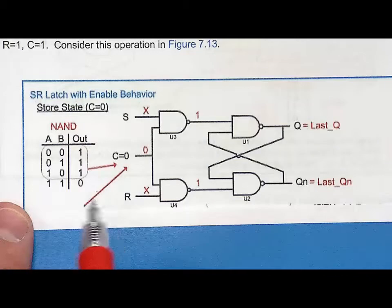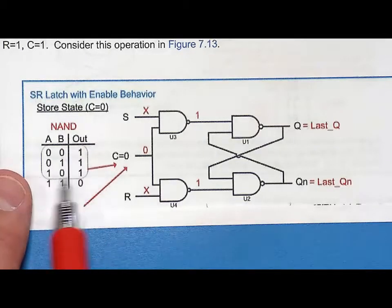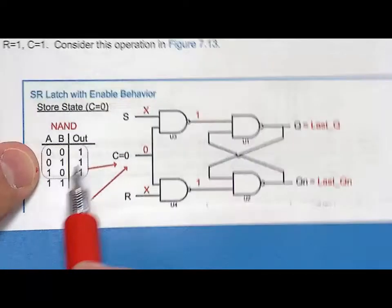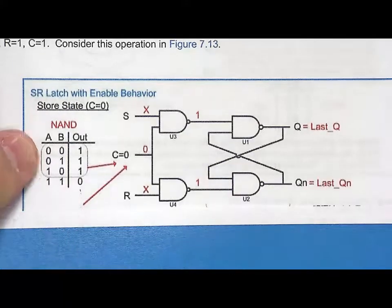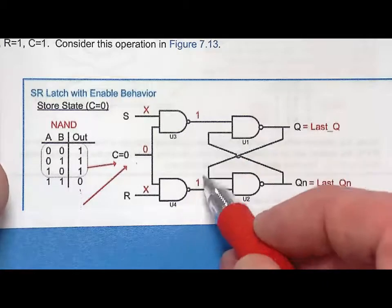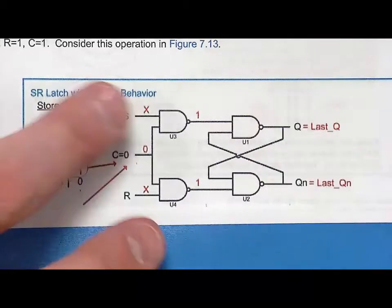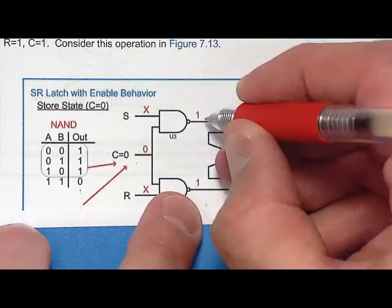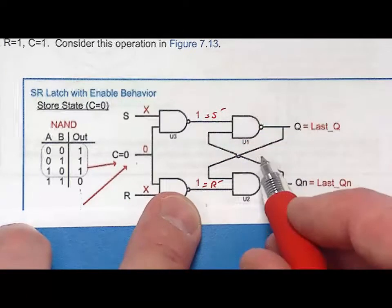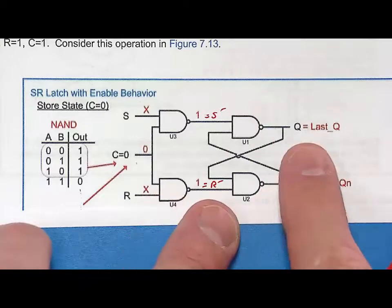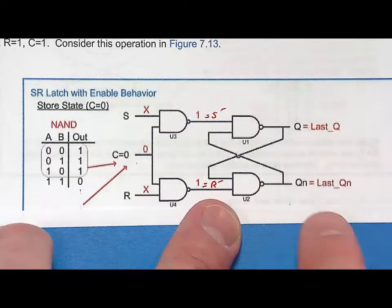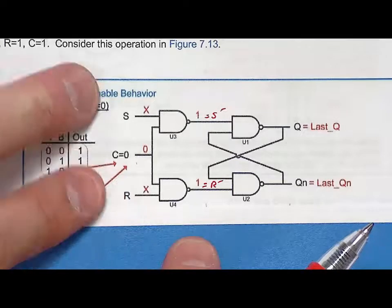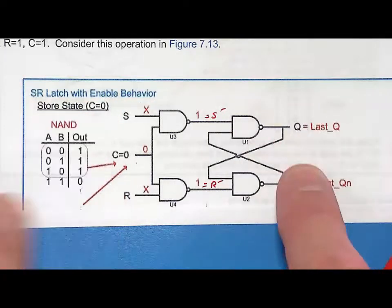The NAND gate truth table outputs are: 1, 1, 1, 0. More importantly, whenever you have a zero on any input of a NAND gate, the output is going to be a one. So putting C equal to zero forces the outputs of both NAND gates to be ones. When you have one and one on S-bar and R-bar, that is the store state for the S-bar R-bar latch — so Q is last Q and QN is last QN. With a single signal, C equals zero, it doesn't matter what S and R are; it just puts the latch into the store state.